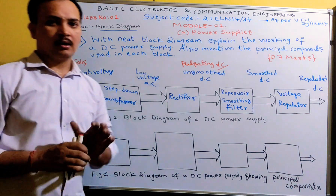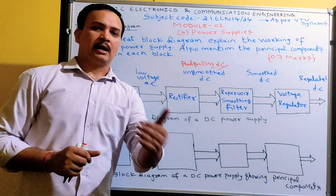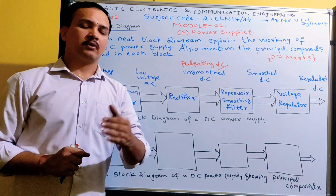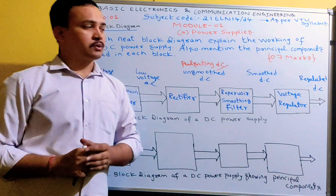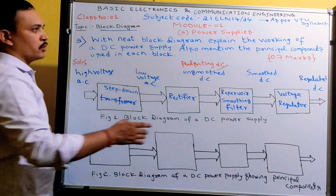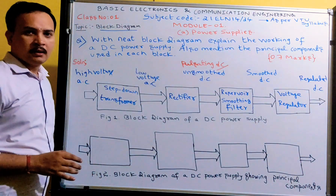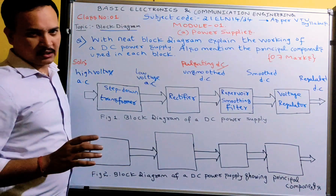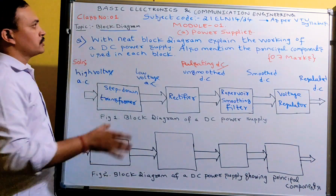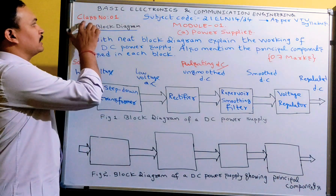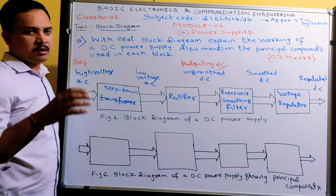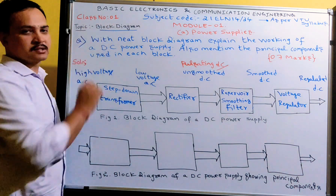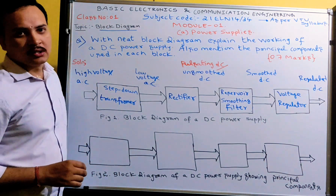In Module 1 there are four major topics: first is Power Supply, second is Amplifiers, third is Operational Amplifiers, and fourth is Oscillators. Let me concentrate in detail on the Power Supply topic. Under Power Supply there are several sub-topics, and the first is the block diagram. I will be uploading lectures by writing the class number, and I request all viewers to watch lectures as per the particular class number.